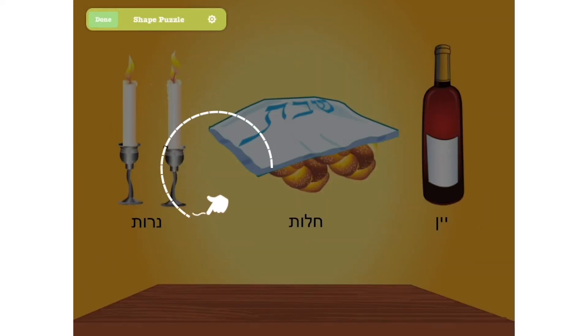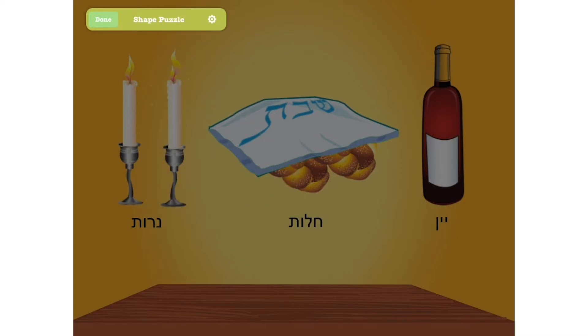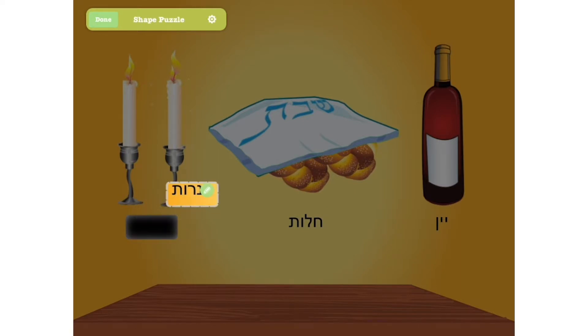Cut the shapes by tracing them with your finger or stylus. Tap the plus sign and drag the piece to the desired area on the page.